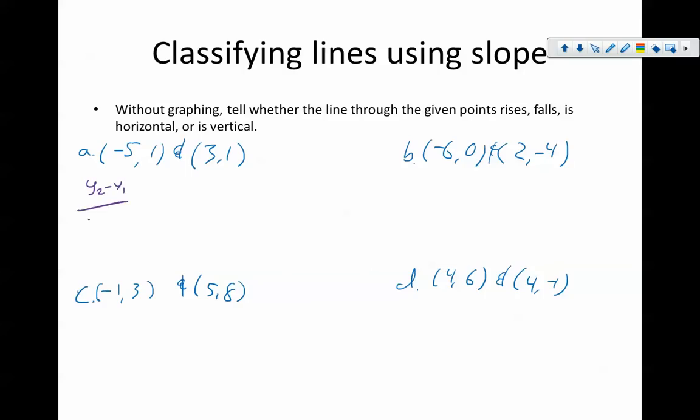Again, I'm going to use my slope formula to calculate this. I'm going to do these calculations relatively fast. So, we have 1 minus 1, 3 minus negative 5. That's giving us 0 over 8. So, my slope is 0, which means that this is a horizontal line.